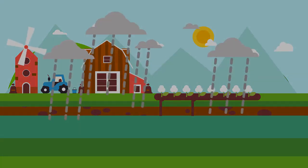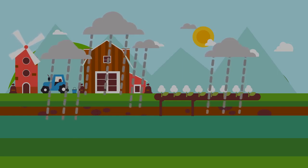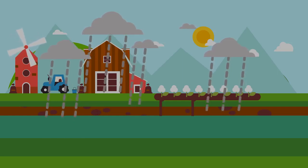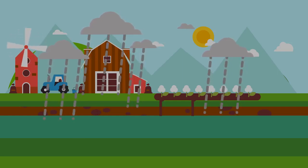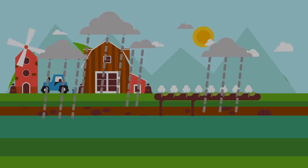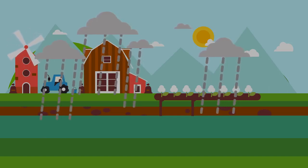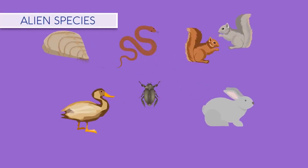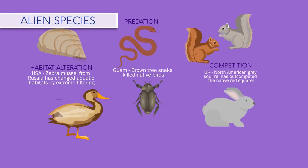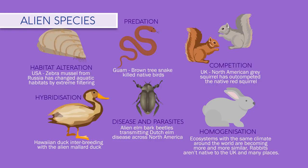Acid rain is the consequence of humans polluting the air. This causes lakes and water bodies to become more acidic, killing fish, mollusks, amphibians and many other species. A huge impact humans have had on planet Earth is the introduction of alien species to habitats.